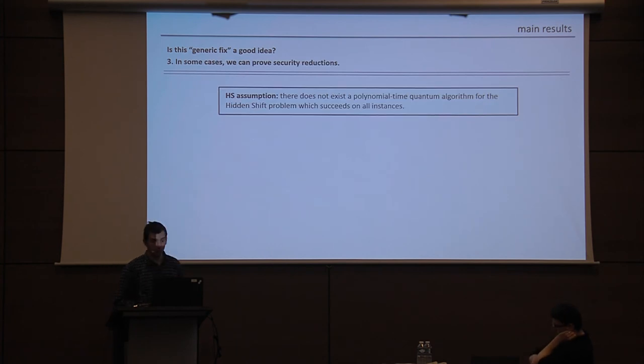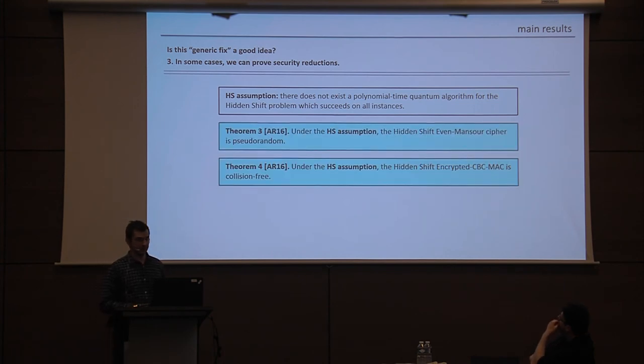And so finally, we were also able to show the following. We were able to give some security reductions. So we start with the following assumption. We start with the assumption that there does not exist a polynomial time-quantum algorithm for the hidden shift problem, a worst-case algorithm. And then we were able to show that, first of all, that the hidden shift Evan Mansoor cipher is pseudorandom and that the hidden shift encrypted CBC Mac is collision-free. So there's quite a few other schemes that I have not mentioned in terms of security reductions. I think in many of those cases, for example, I think for LRW tweakable ciphers, a simple adaptation of this theorem would also give you a security reduction in that case. For all the other things, I think it's mostly a matter of trying and working harder to get those reductions. I think it's likely that they exist.